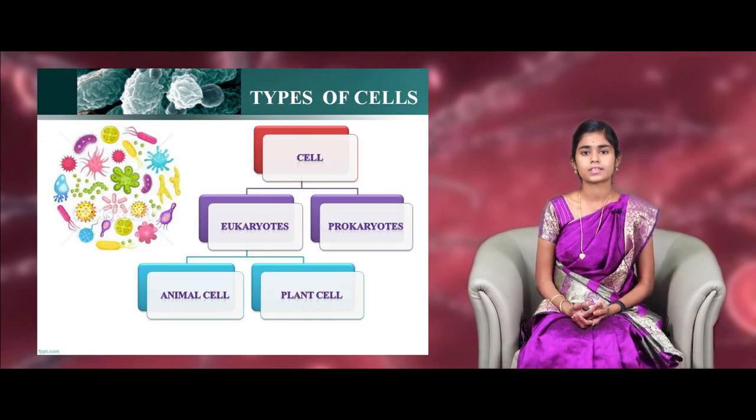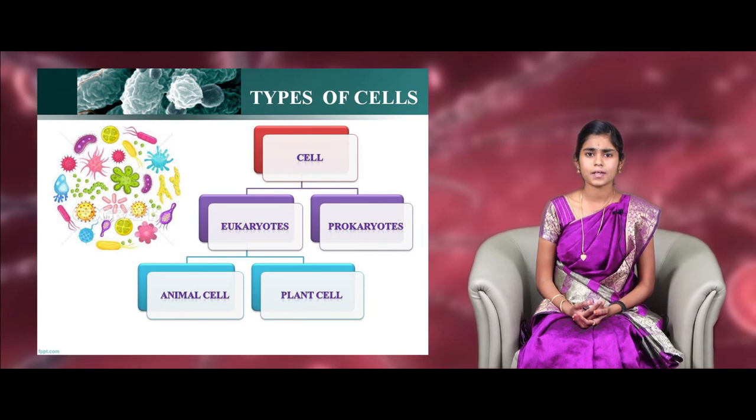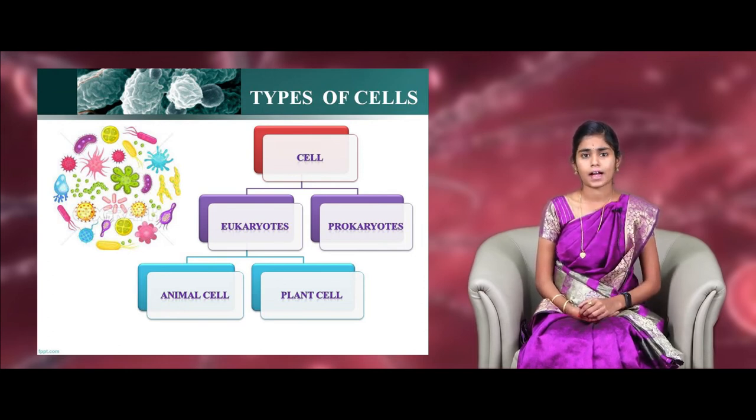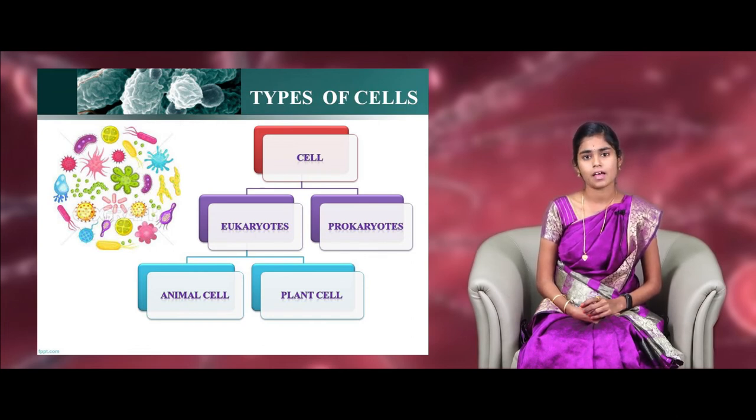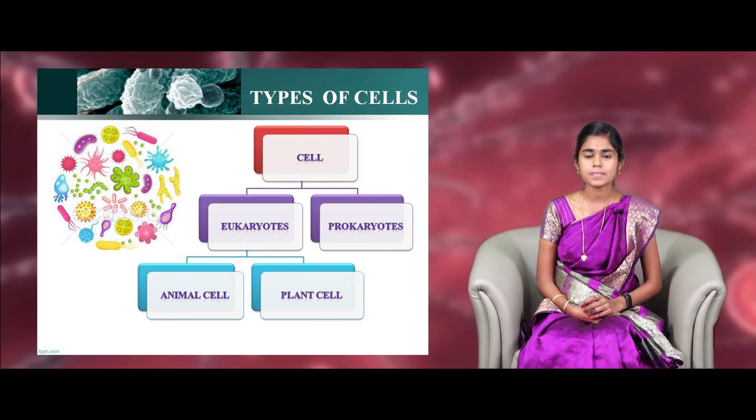Now, comes to the types of cells. The cells are majorly divided into two types. One is prokaryotes and another one is eukaryotes. In prokaryotes, they don't have nucleus. The genetic materials are suspended over the cytoplasm and that is called nucleoid. And the examples are bacteria, cyanobacteria, etc. In the case of eukaryotes, they have true nucleus and we are all comes under the category of eukaryotes.